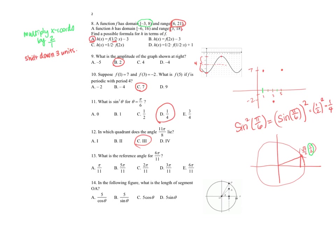What is the reference angle for 6π over 11? Dividing 0 to pi into 11 equal pieces, halfway would be 5.5π/11, so 6π/11 is just past the halfway point, meaning it lies in the second quadrant. The reference angle is pi minus 6π/11, which equals 11π/11 minus 6π/11, giving 5π over 11. So the correct answer for the reference angle is 5π/11.